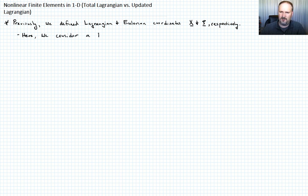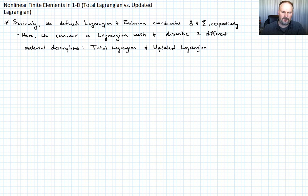We're not actually going to draw the mesh, but we consider a Lagrangian mesh, which means we're going to track material points. And we want to describe two different material descriptions. Those descriptions are going to be: one will be called the total Lagrangian, and the other will be the updated Lagrangian.